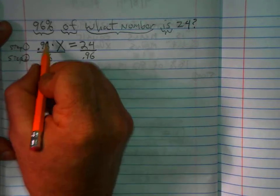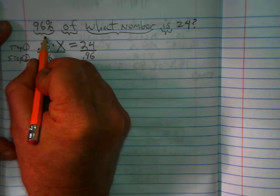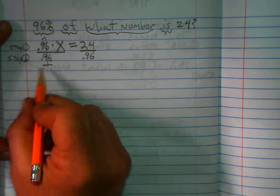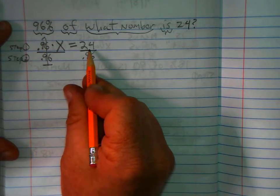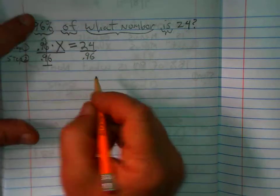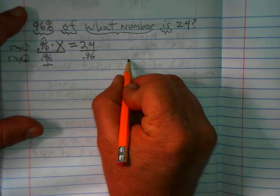Any number over itself is equal to one. So here's my giant one. On the left, on the right, I have 24 divided by .96. So I draw a division house.